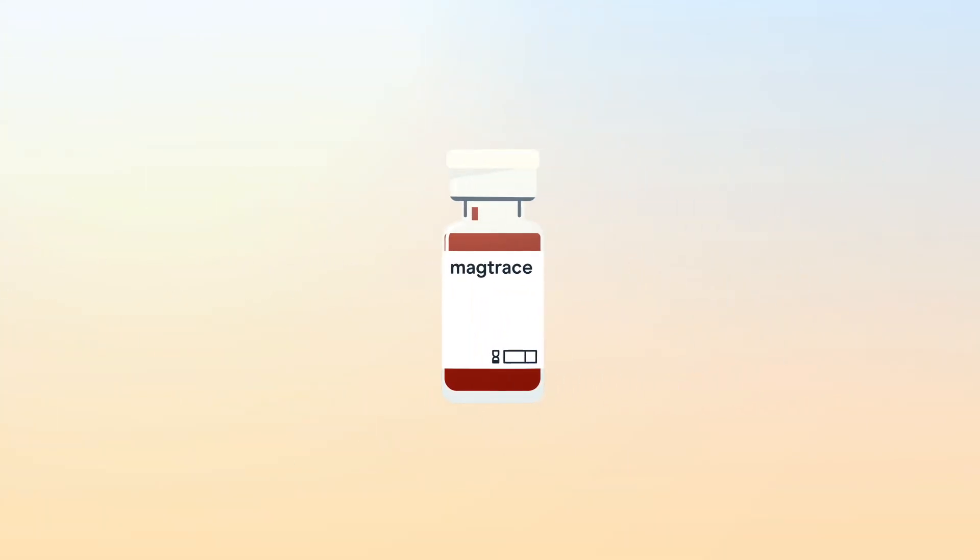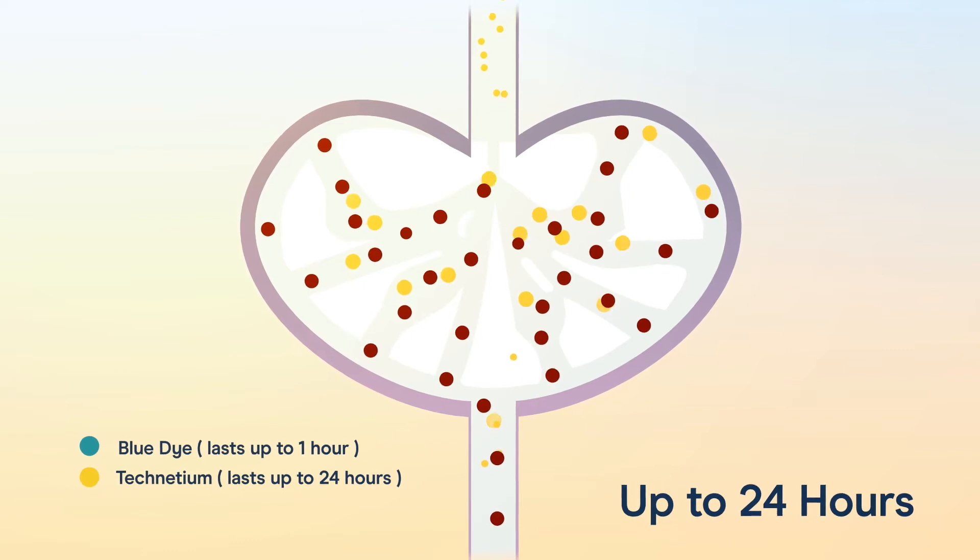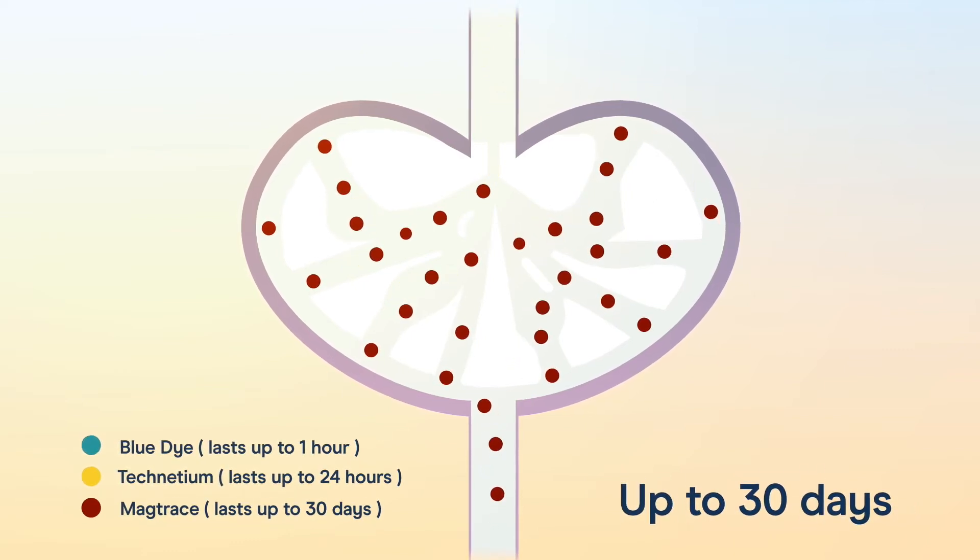Using MagTrace, an advanced lymphatic tracer that remains in the nodes longer than any other tracer, surgeons can accurately mark the most likely location of the cancer if it's found to have spread to the underarm.